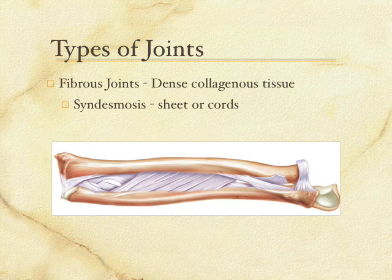Since we don't know the names of those two bones together yet, the example we're going to use is the joint we call the tibiofibular joint. You can imagine the tibia and the fibula in that picture, and that gap between the two of them has sheets of connective tissue in there. So that is a good example of what a syndesmosis is.